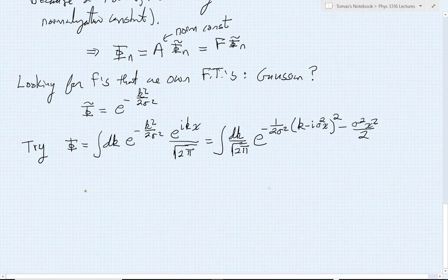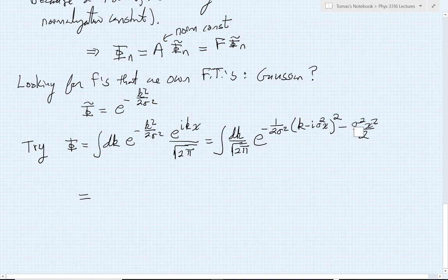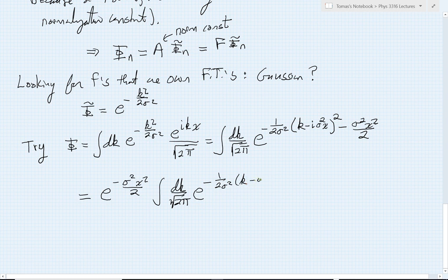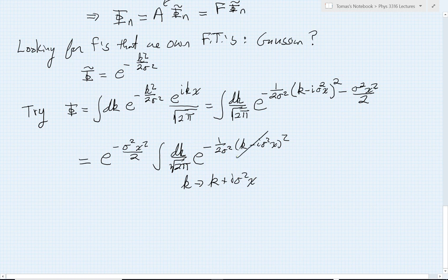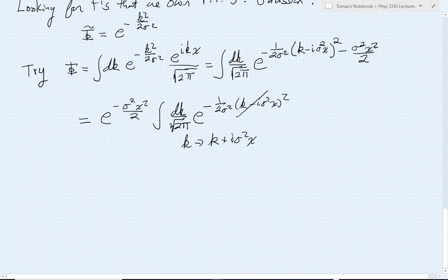Very nice. Now the next maneuver in here is going to be to pull out this constant piece because it doesn't depend on k. So there's going to be this e to the minus sigma squared x squared divided by 2. What I'm left with on the inside then is an integral dk over root 2π, although we're really not worried about constants so much today, e to the minus 1 over 2 sigma squared k minus i sigma squared x all squared. But of course the next thing will be to change variables. We'll let k go to k plus i sigma squared x. And when I do that, this portion will disappear, and now I'm left with just a standard Gaussian integral.